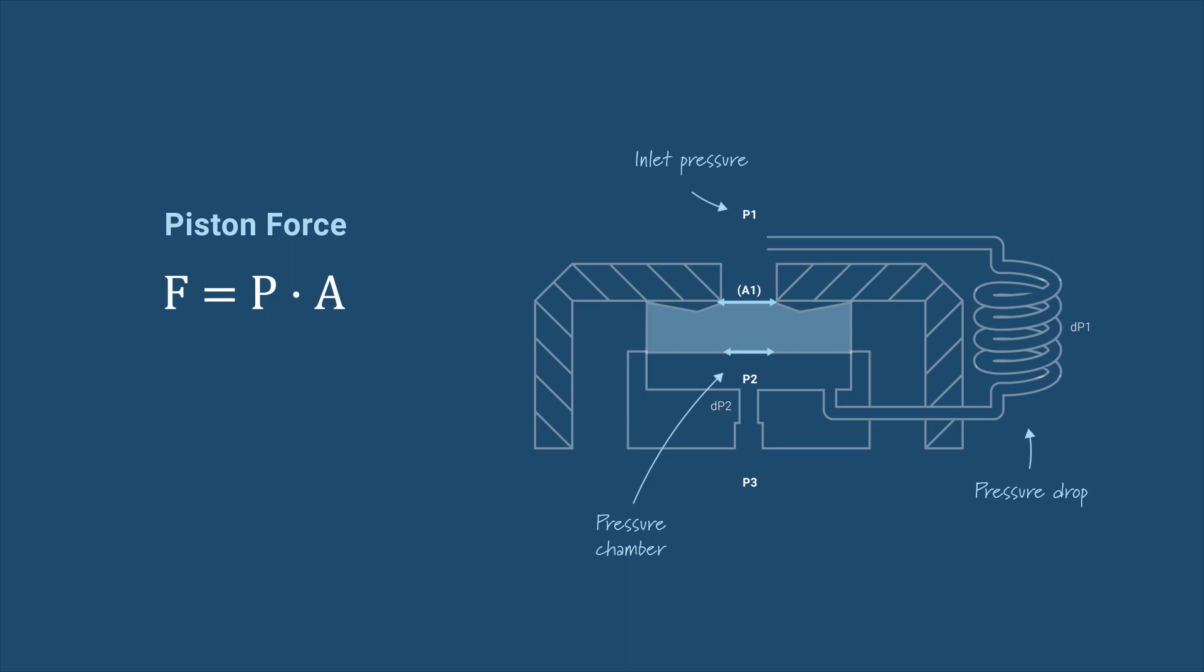is smaller than the area exposed to the P2 pressure, A2. This means that a greater force will be created below the piston than above it, which moves it upwards to close the inlet.